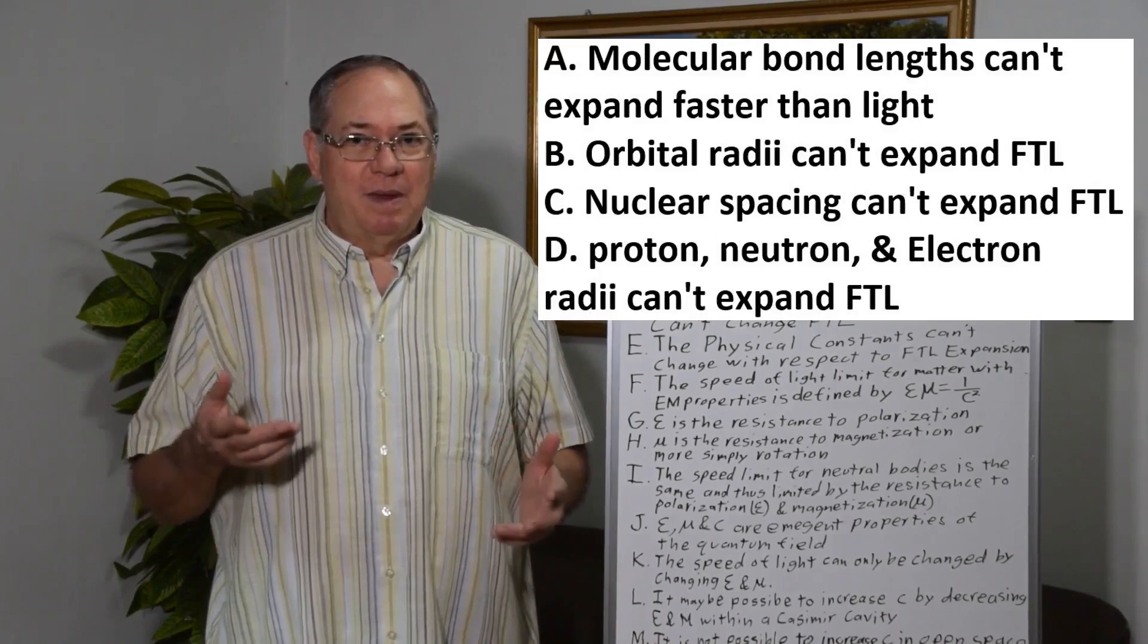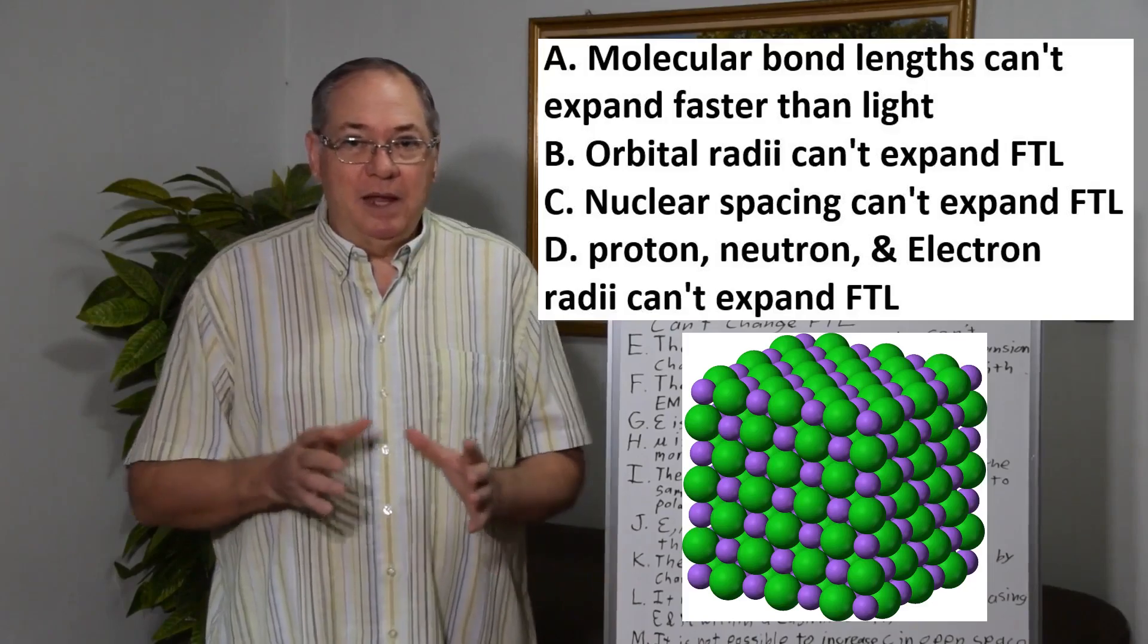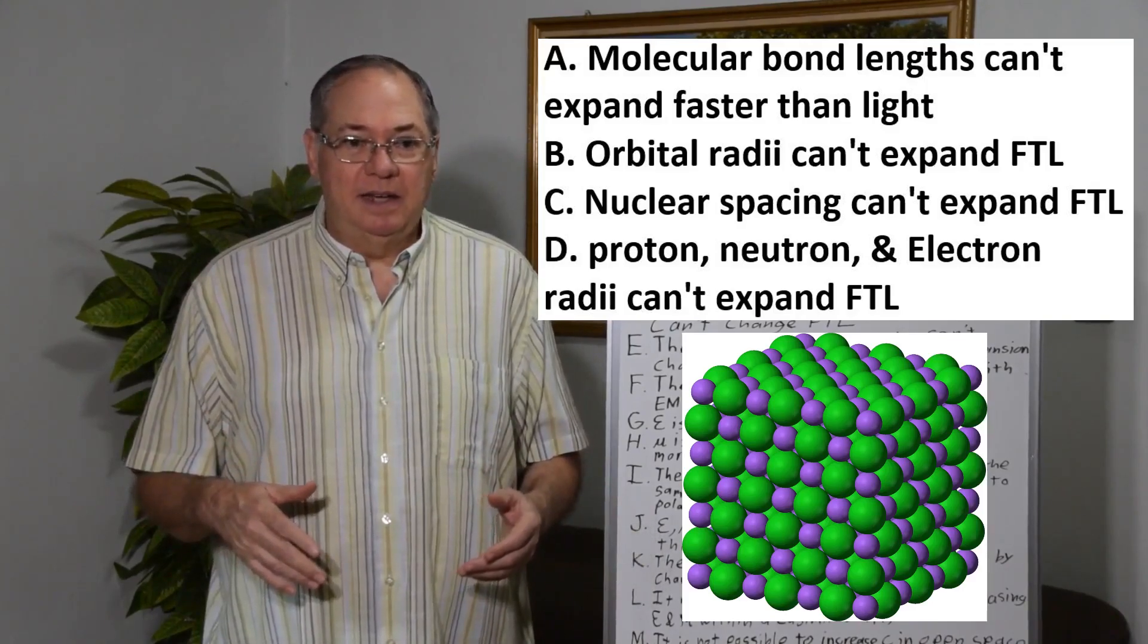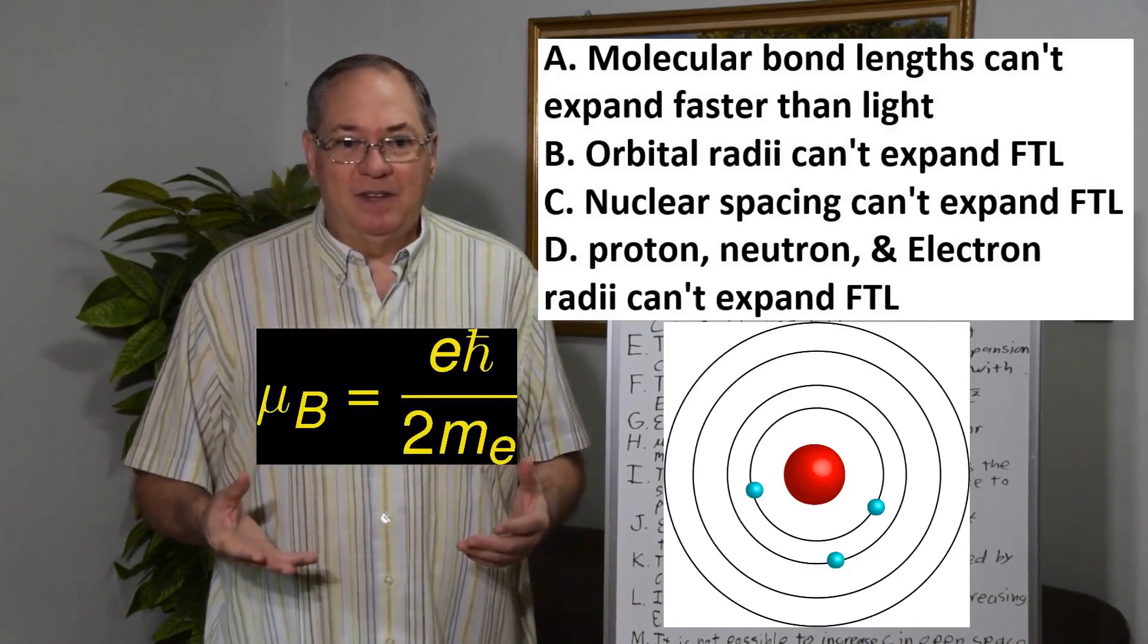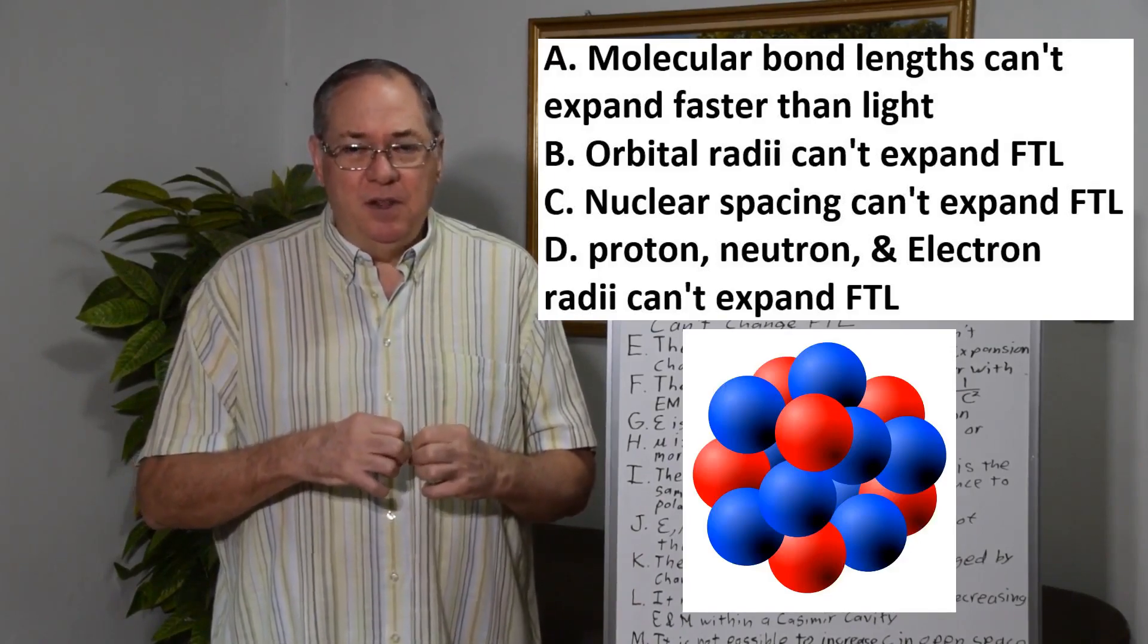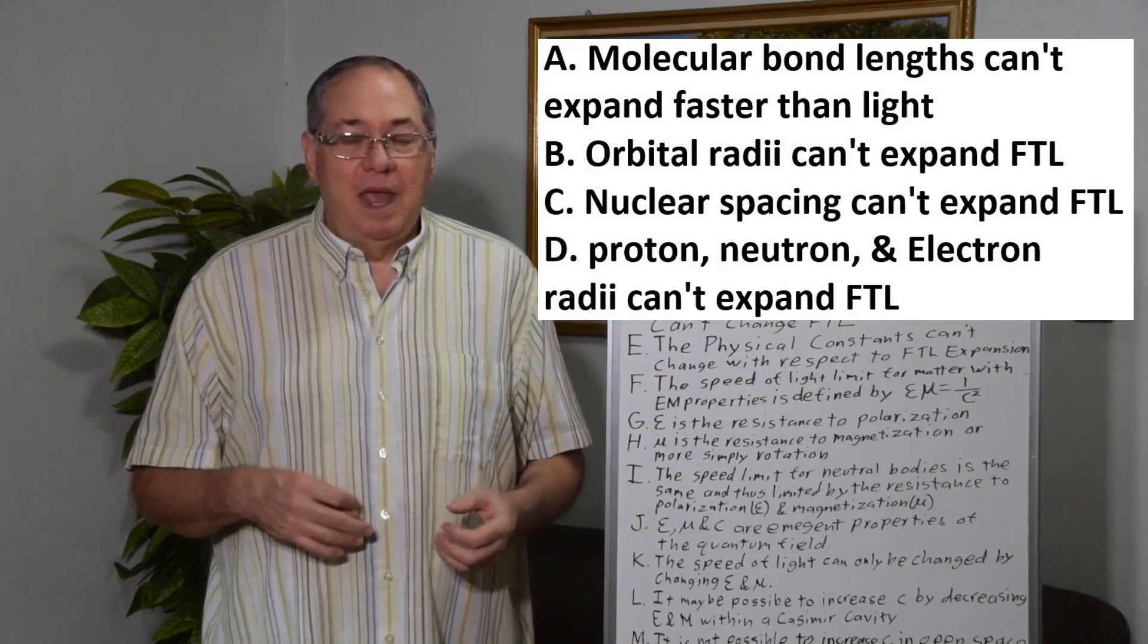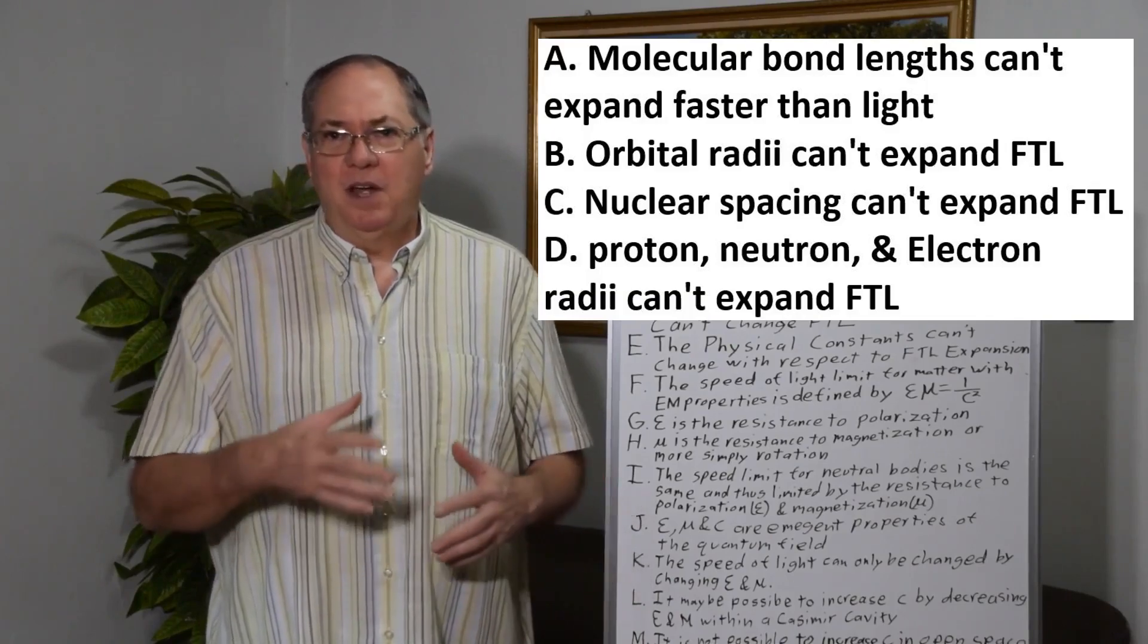But the problem gets even worse in that it can't happen at the molecular level or the atomic level. The molecular bonds don't expand faster than light, or the crystal lattice spacing doesn't expand faster than light. Orbital radii, the Bohr orbit doesn't expand faster than light. Nuclear spacing between protons and neutrons in the nucleus doesn't expand faster than light. If it did, the nuclei would just blow apart.